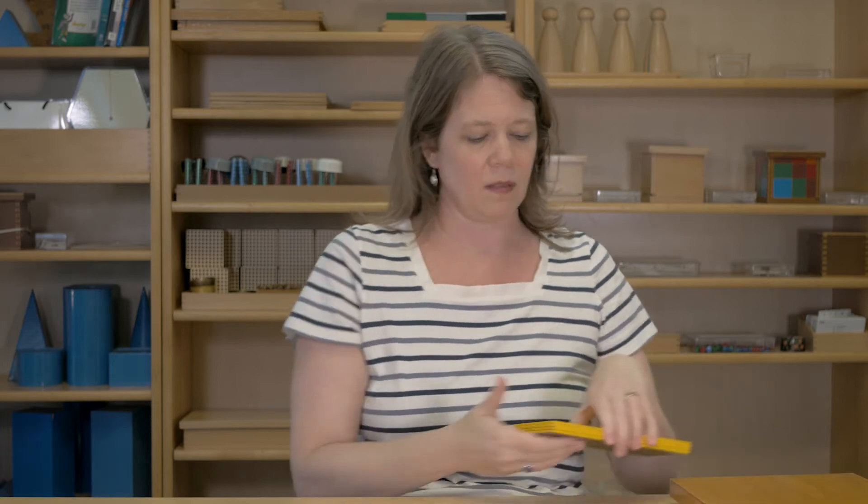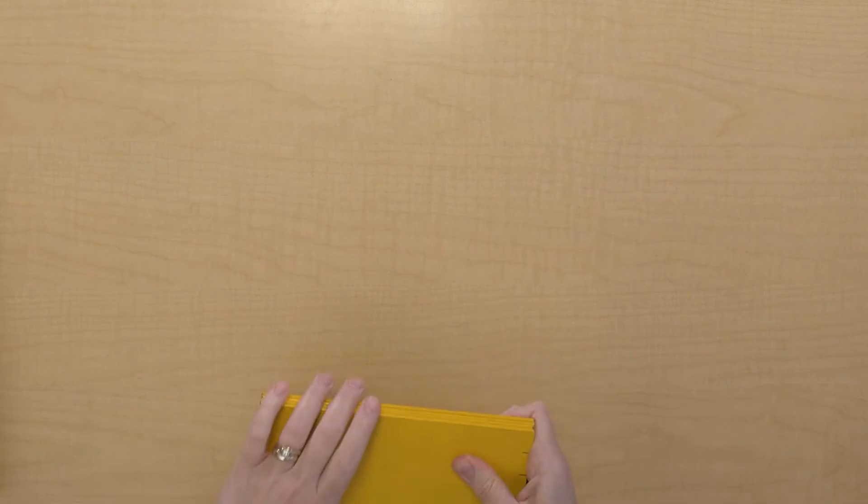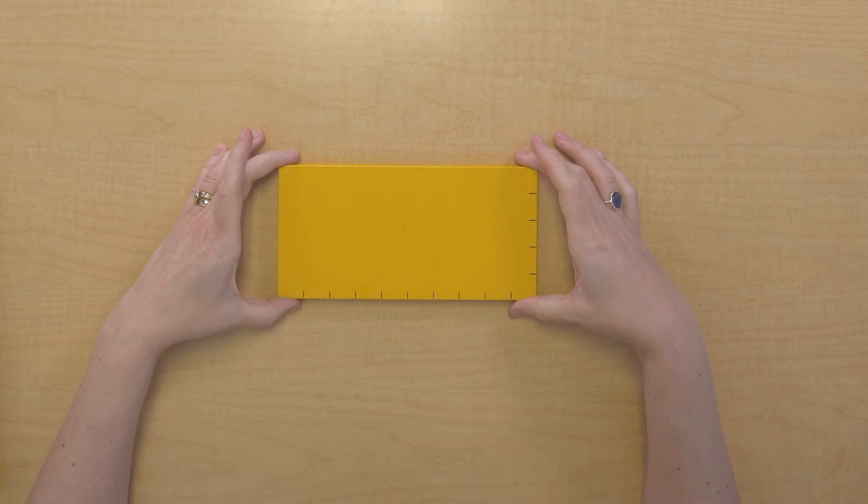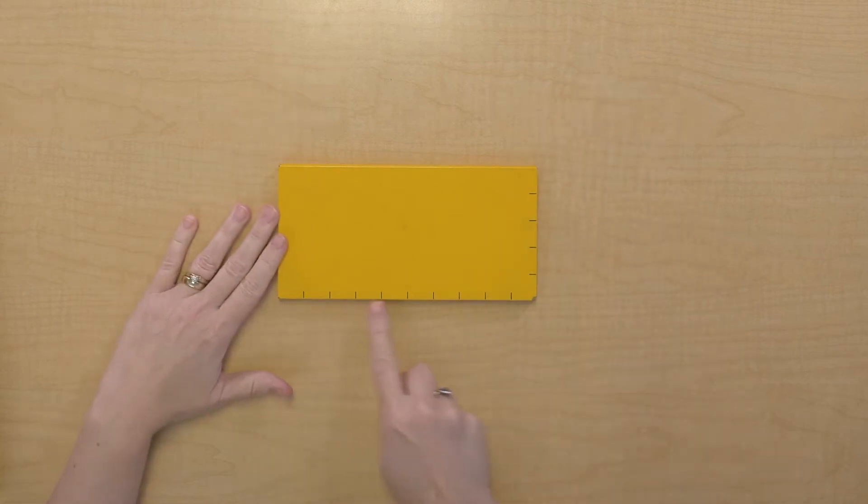And I've got a material here to help us. This is the yellow area material. And I've got some rectangles here. See that? And I've got here the base of my rectangle and the height of my rectangle.